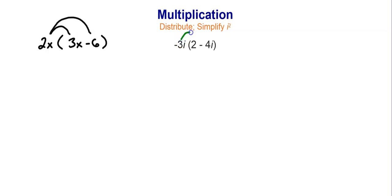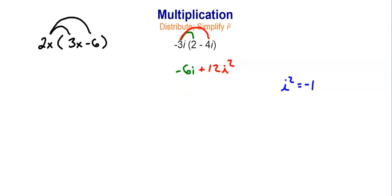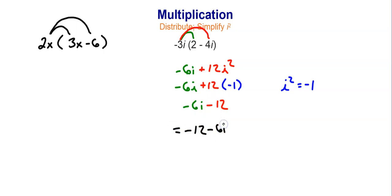So I'm going to do negative 3i times 2: negative 3 times 2 is negative 6, and you have i. Then negative 3i times negative 4i: negative 3 times negative 4 is plus 12, and i times i is i squared. Again, very much like Algebra 1, but we have to keep in mind that i squared equals negative 1. So this becomes negative 6i plus 12 times negative 1, giving us negative 6i minus 12. Written in standard form with the real number first, that's negative 12 minus 6i.